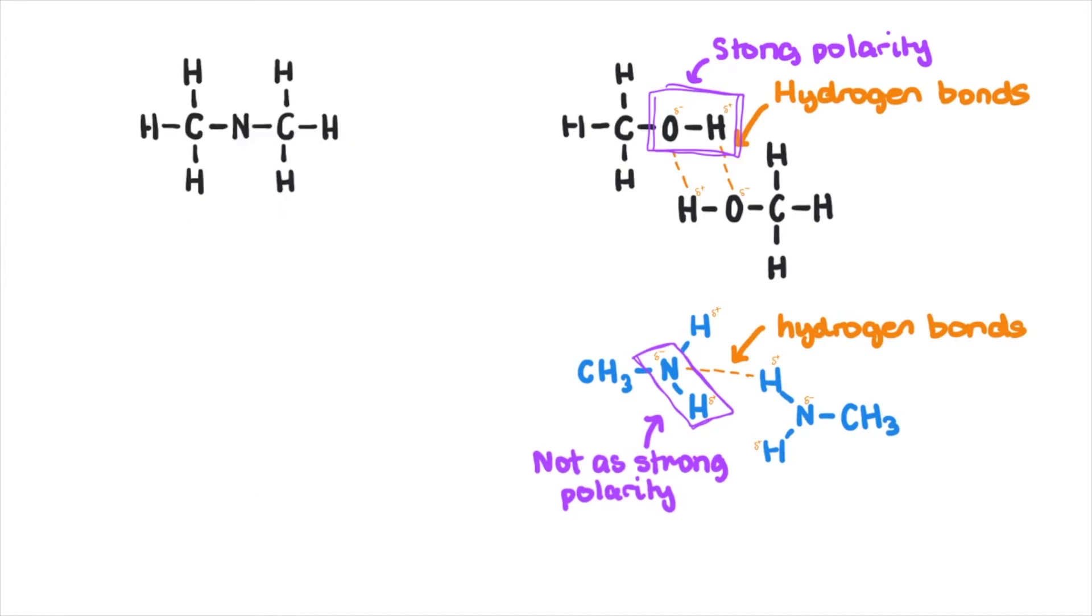If you look at a secondary amine, where the functional group is located within the carbon chain, it's not as accessible compared to the primary amine. So these tend to have a lower boiling point. How about tertiary amines? Hydrogen bonding is very difficult, so its boiling point is even lower than primary and secondary amines.